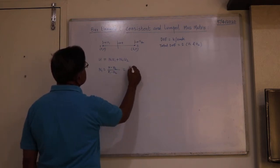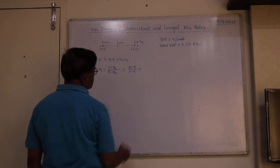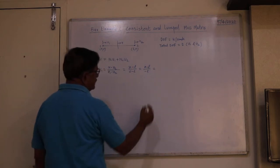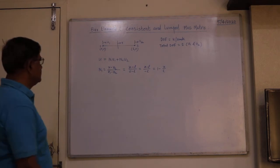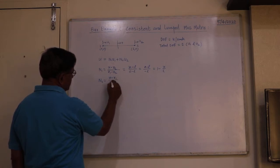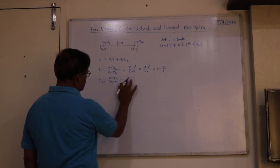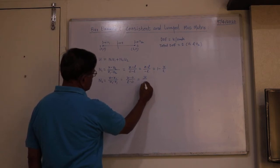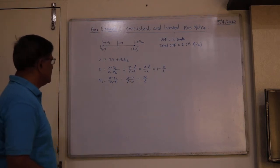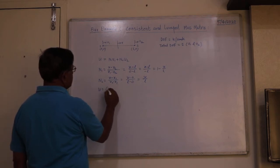Substituting the coordinates — x2 = L and x1 = 0 — N1 comes out to be (x − x2)/(x1 − x2), which simplifies to (1 − x/L). This is the N1 shape function. Similarly N2 = (x − x1)/(x2 − x1) = x/L.